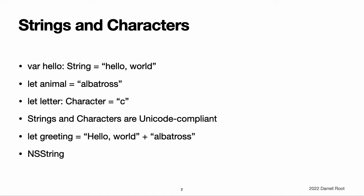String concatenation is as simple as combining two strings with the plus operator. And string mutability is managed by choosing between a constant or a variable, just like any other value in Swift. You can also use strings to insert constants, variables, literals, and expressions into longer strings in a process known as string interpolation.